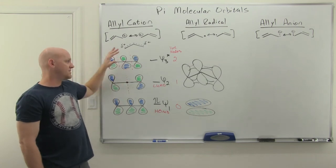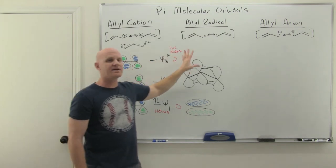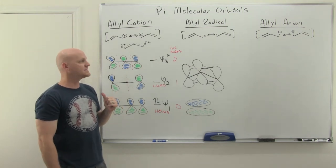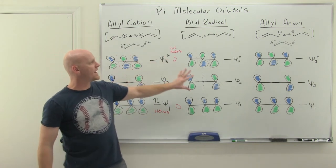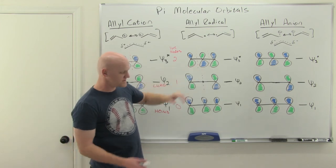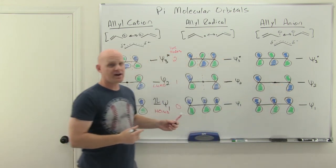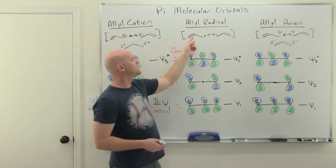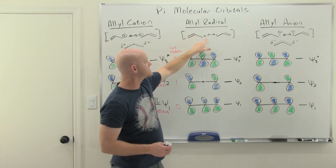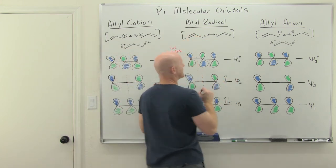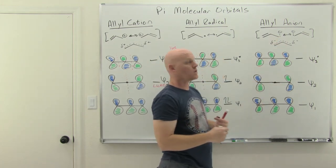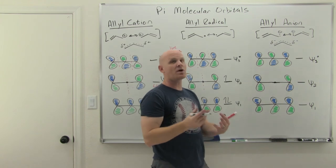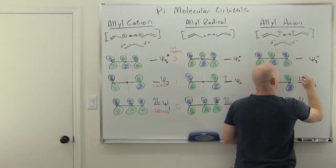The molecular orbital diagram itself is identical for the allyl radical and allyl anion. The only difference is how many electrons we fill in, and therefore which orbital is the HOMO and which is the LUMO. With the allyl radical, the radical electron is in the p orbital, giving three pi electrons total. With the allyl anion, that anion is also in a p orbital — the carbon is sp2 hybridized due to resonance, putting the lone pair in a p orbital as part of the pi system — giving four pi electrons.